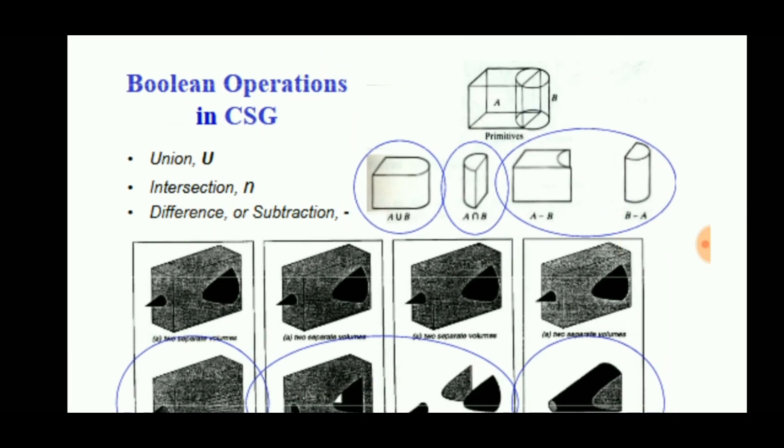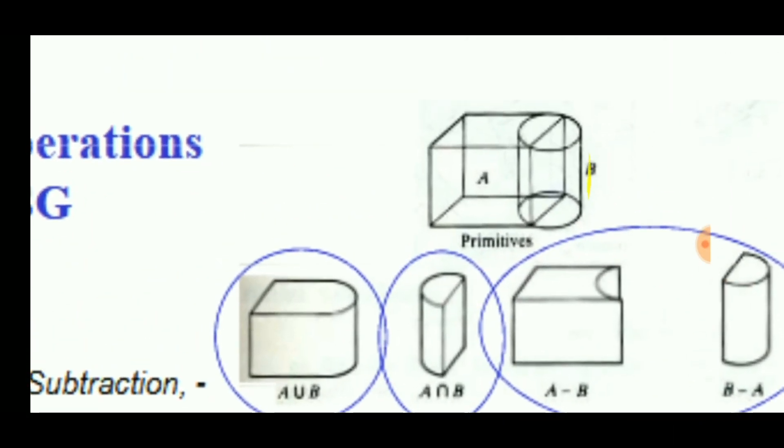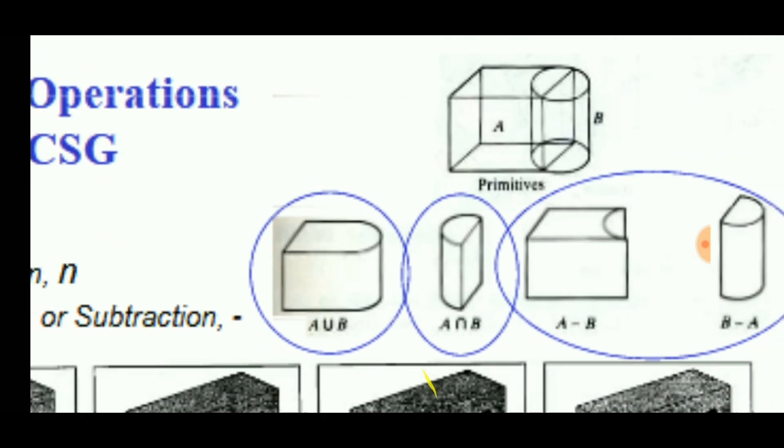These are some of the Boolean operations such as union, intersection, and difference, or we can say subtraction. In this diagram, we can clearly see the complete object. When we make union A union B, we can get this shape.